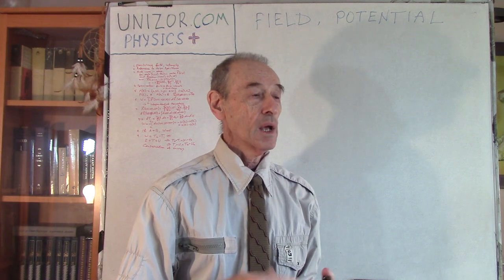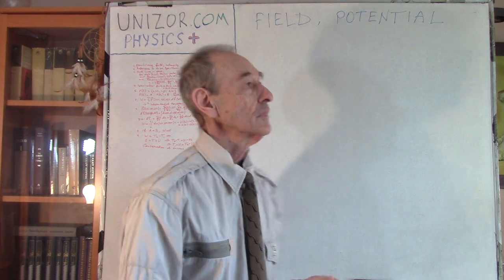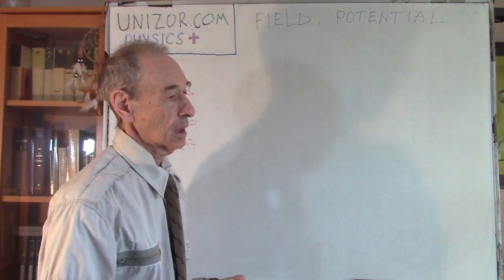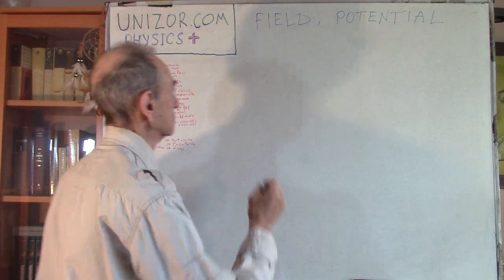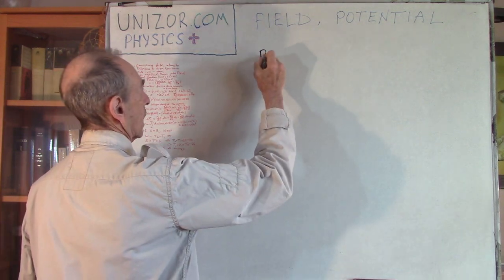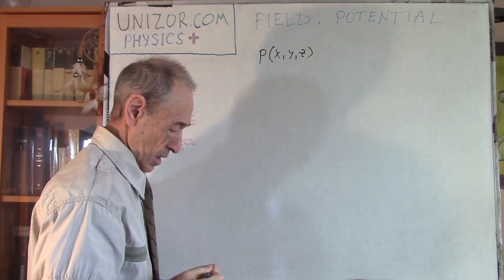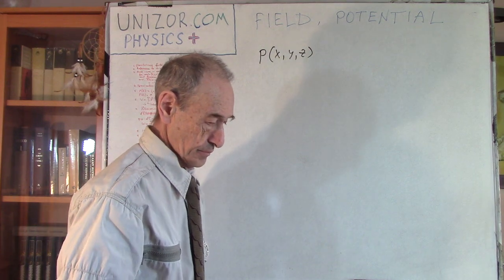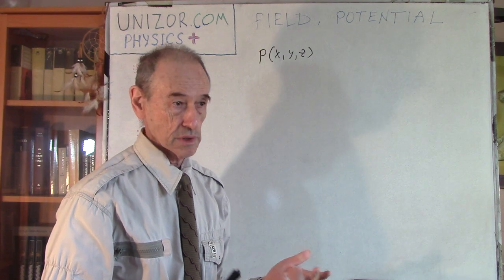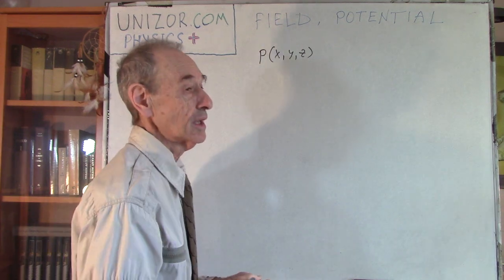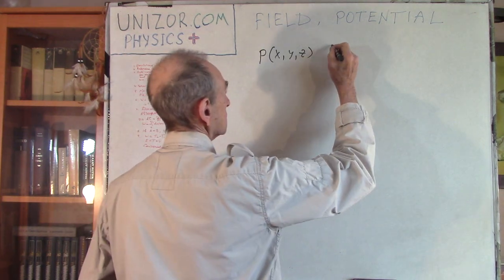Let's assume that we have a certain point in our three-dimensional space, and let's assume this is a material point, which means it has certain mass - unit mass actually, if we go to the prototype of a gravitational field.